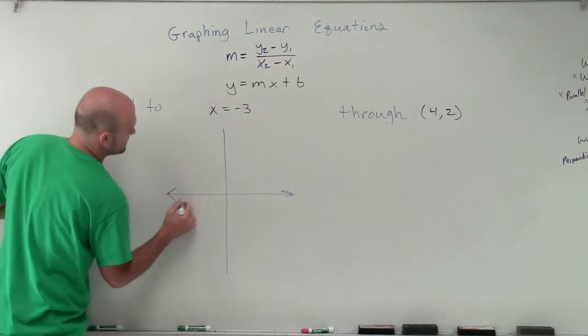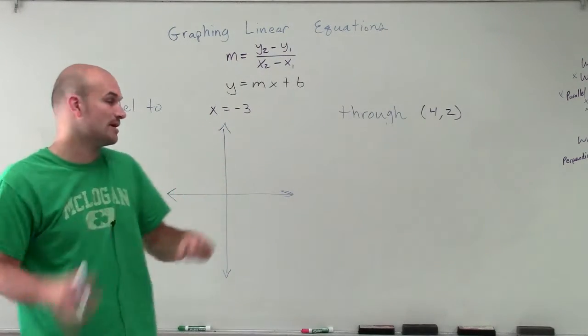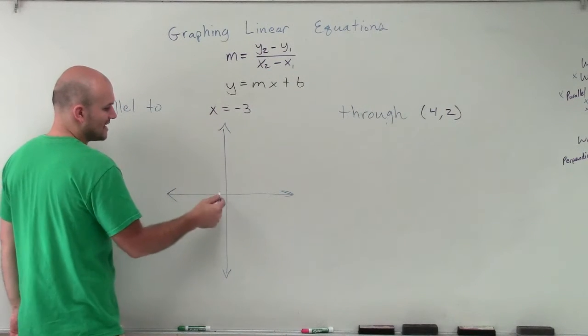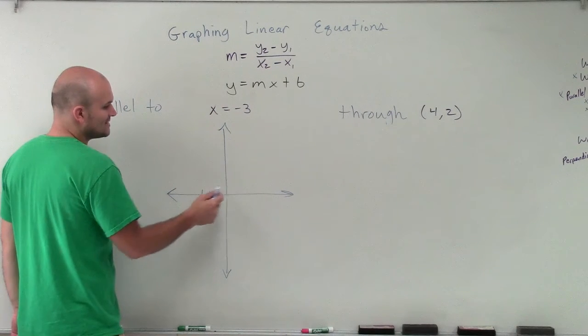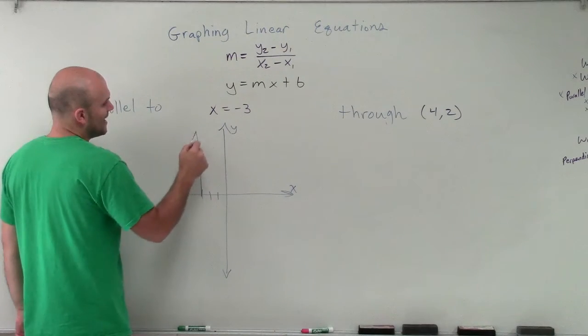If I was going to graph this, I could do a table, but I showed you how to graph vertical lines in a different video in my series. But if I was going to graph this, I know that x equals negative 3. And x is going to always equal negative 3, no matter what y-coordinate I have. So I'm going to have a vertical line.